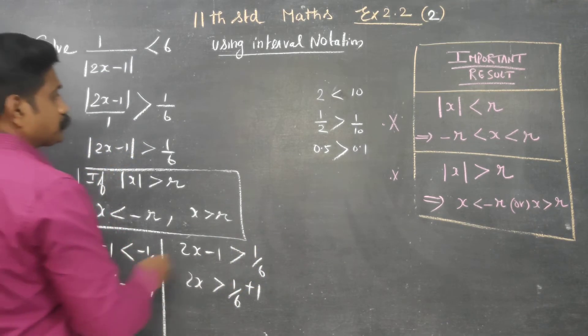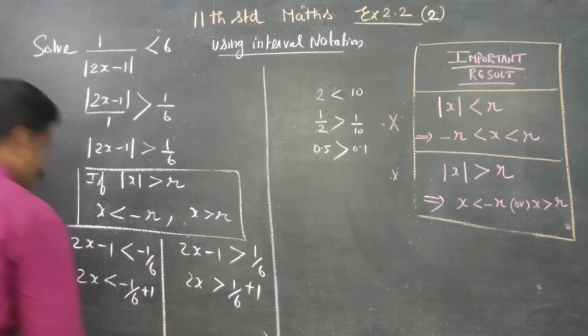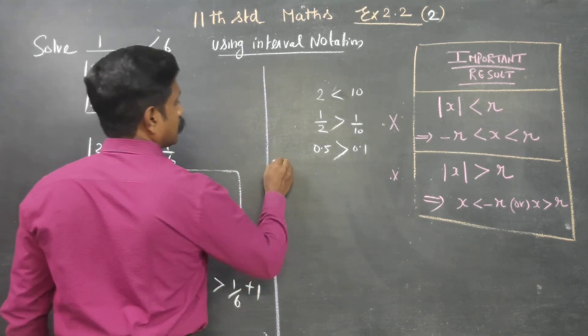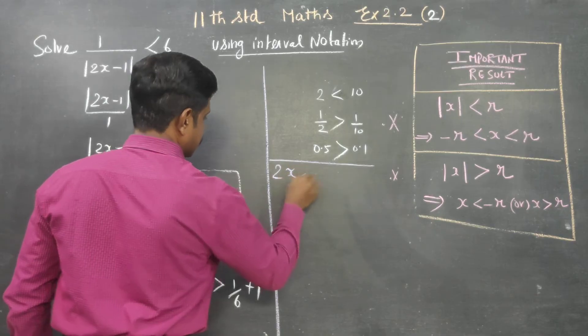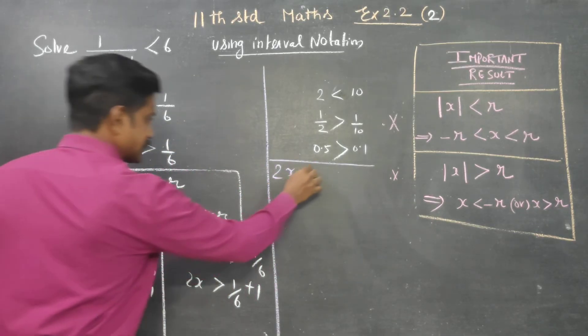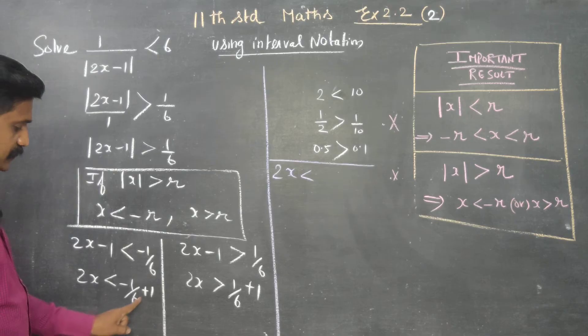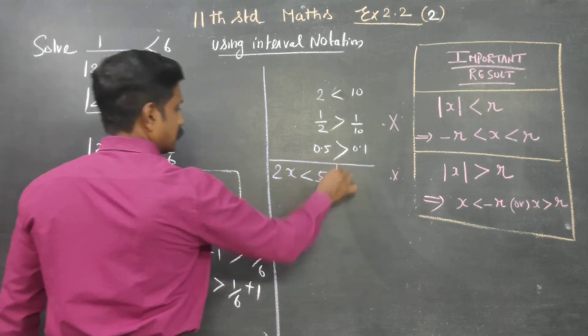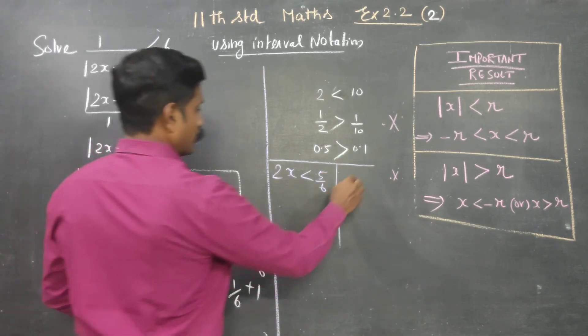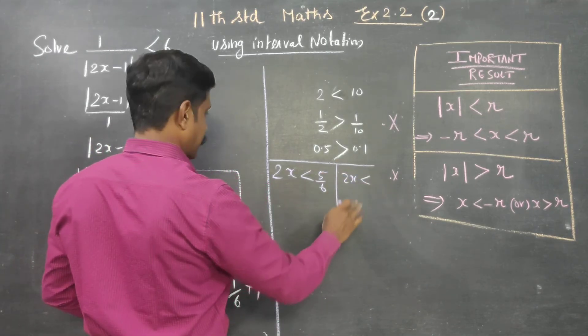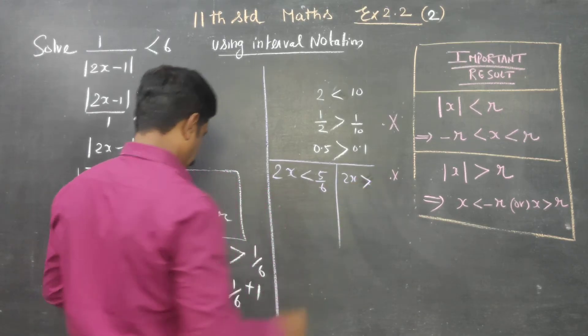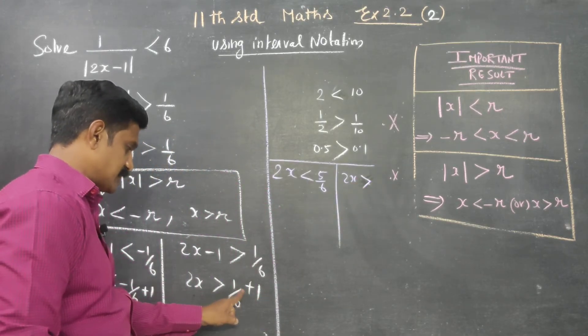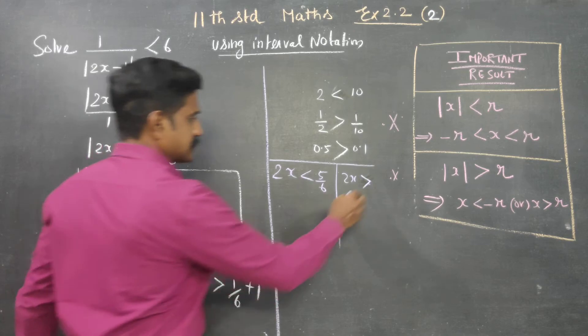Then simplify. 2x less than, cross multiply, 6 ones are 6, minus 1 by 6 equals 5 by 6. And another area, 2x greater than, 6 ones are 6, 6 plus 1 equals 7, cross multiply and add, 7 by 6.